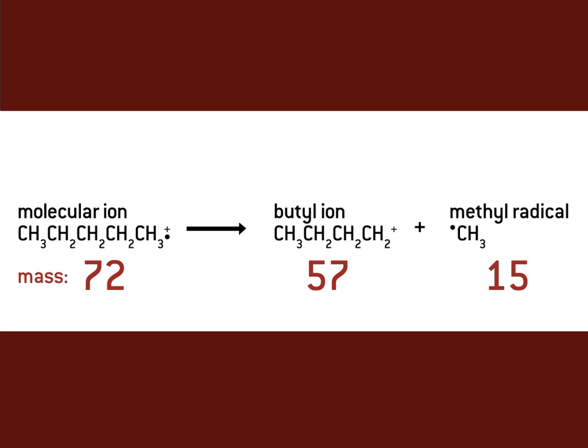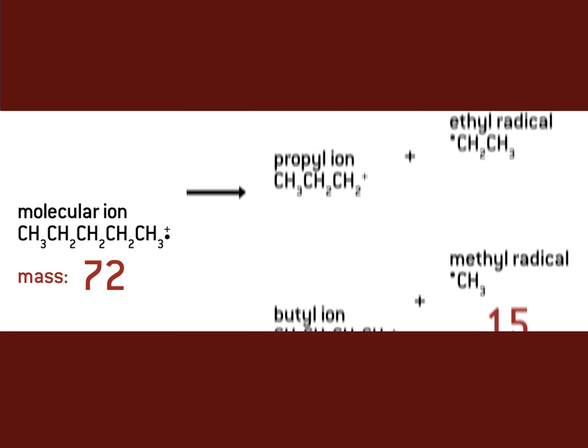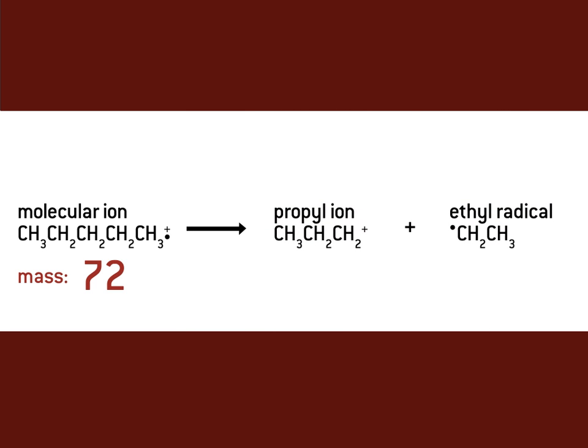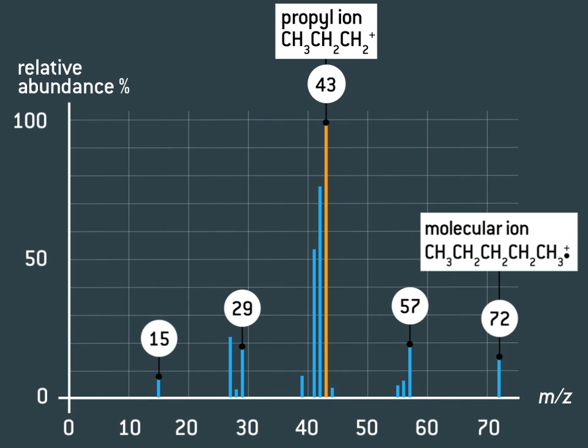What if the pentane molecule splits like this? The propyl fragment has a mass of 43, and the ethyl fragment has a mass of 29. So the peak at mass 43 is caused by propyl ions. Ethyl ions produced by a similar splitting pattern also explain this peak at mass 29.